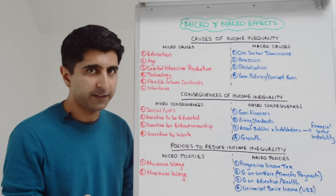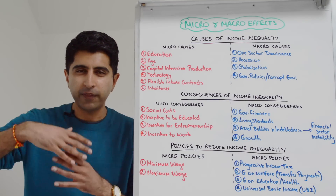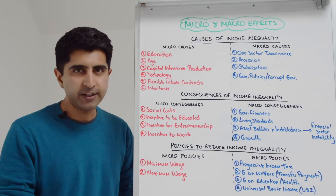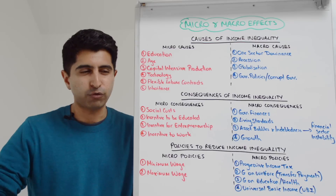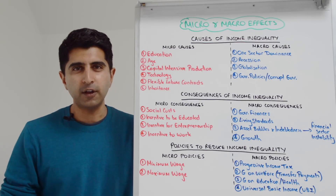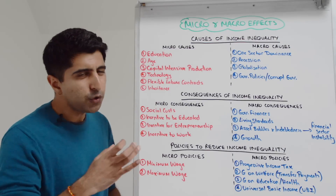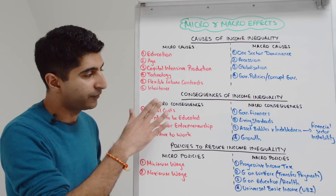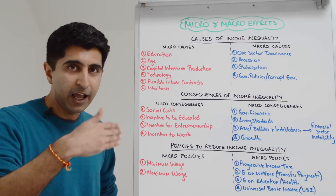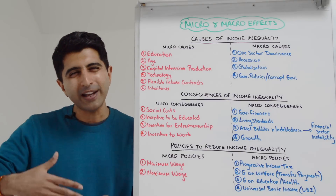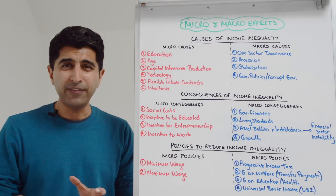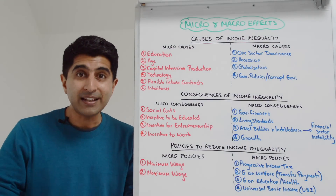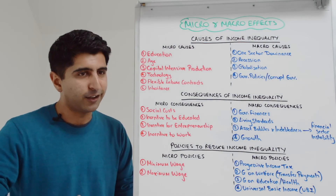Let's move now to the consequences of income inequality. On the micro side, the social costs: with significant income inequality we expect a rise in homelessness and poverty, more riots and protests, greater reliance on healthcare services, and higher crime rates. The burden on the taxpayer and negative externalities from all those issues make these micro consequences. But there are also three very strong incentive effects rooted in the labor market.